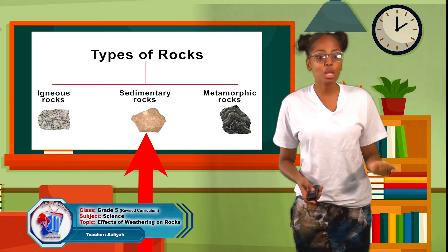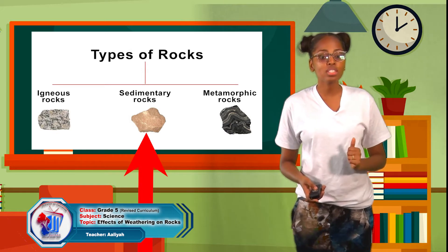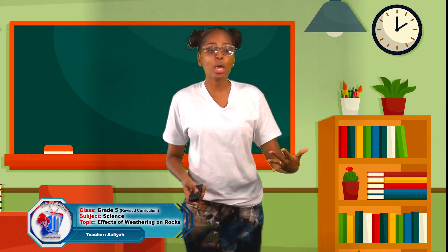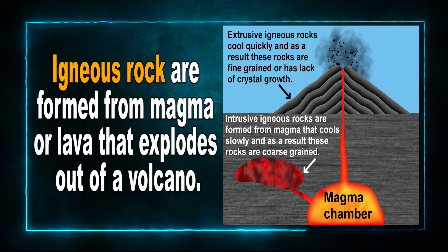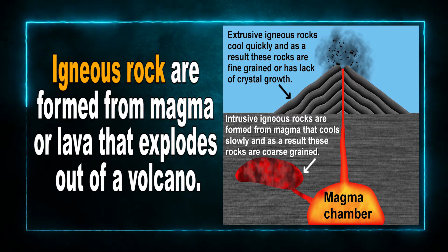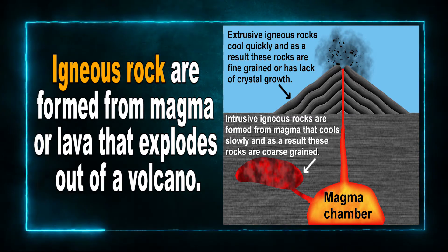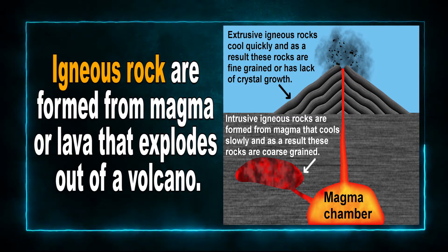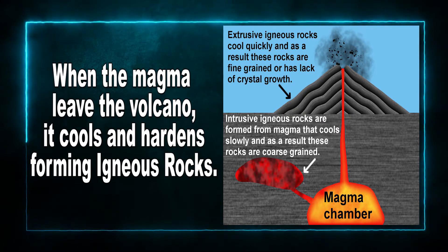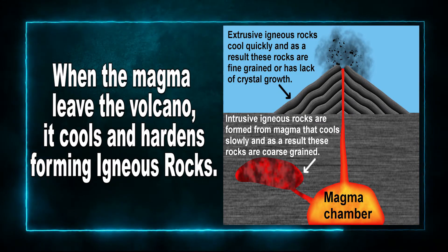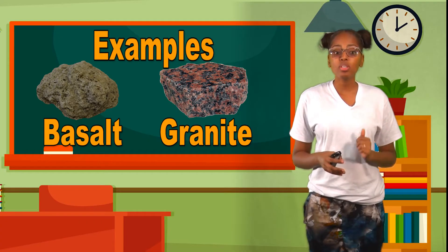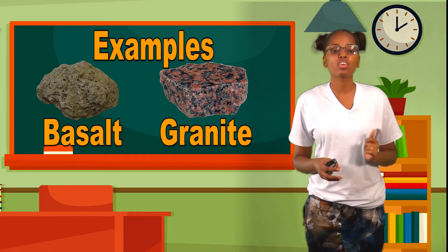There are three types of rock: igneous rocks, sedimentary rocks, and metamorphic rocks. Let's discuss each type individually. Igneous rocks are formed from magma or lava that explodes out of a volcano. When the magma leaves the volcano, it cools and hardens, forming igneous rocks. Examples include basalt and granite.